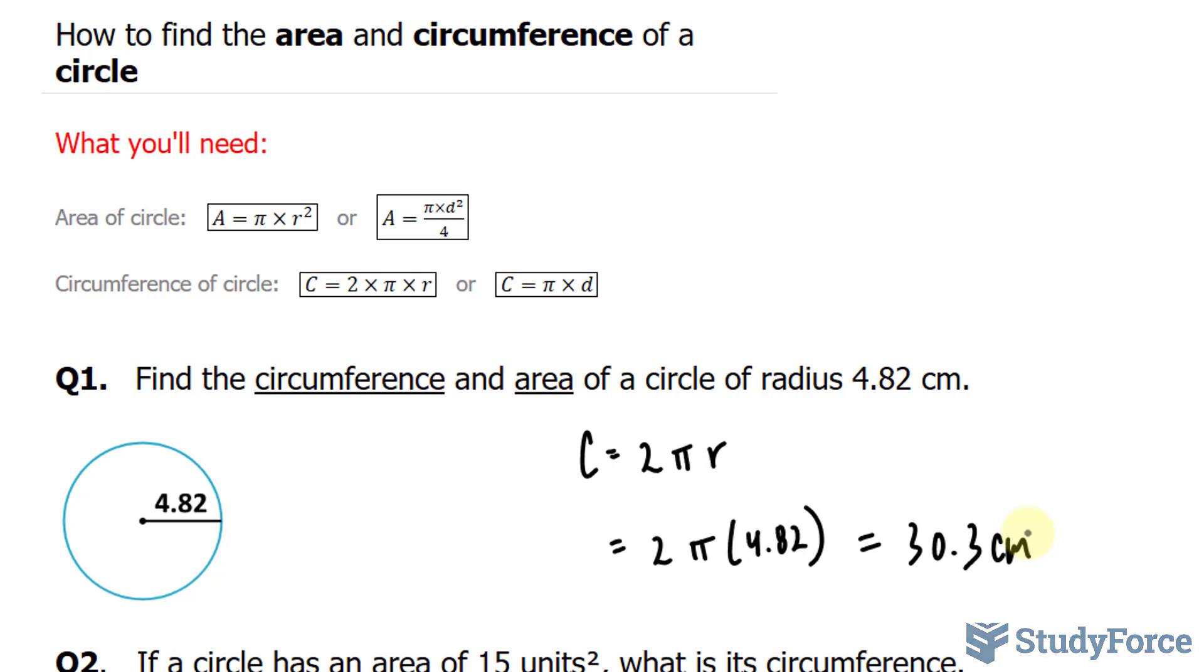We have two versions of the area formula. We have this one which relates the area and the radius, and we have this one which relates the area and the diameter. We've been given the radius, so I'll use this formula. We have A is equal to pi times r, which is 4.82, raised to the power of 2.